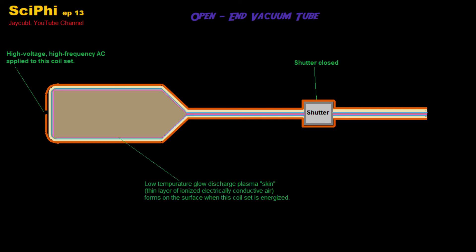This forms a thin layer of cold plasma, which is just ionized conductive gas along the surface of the coil.